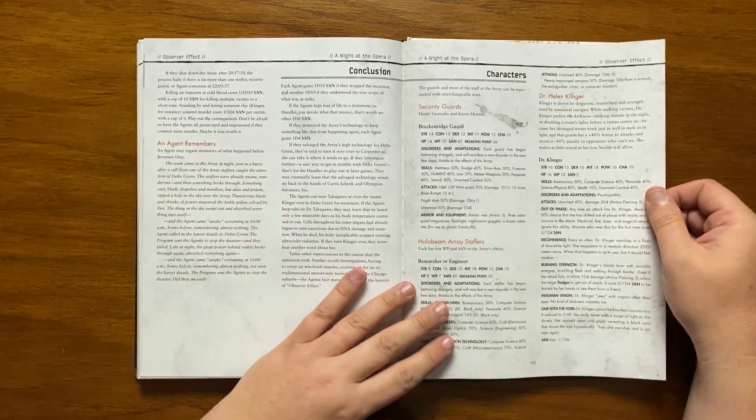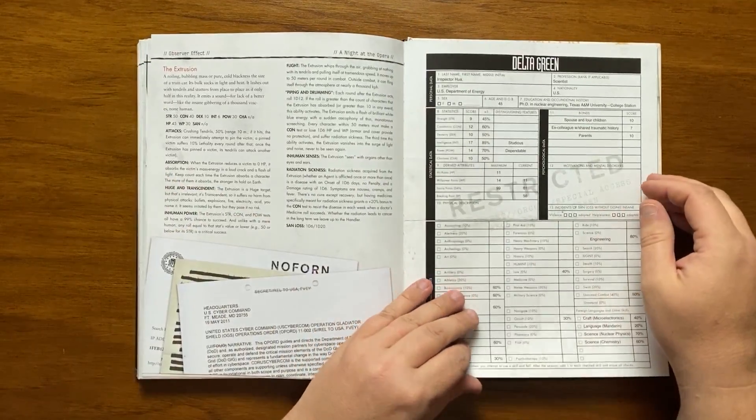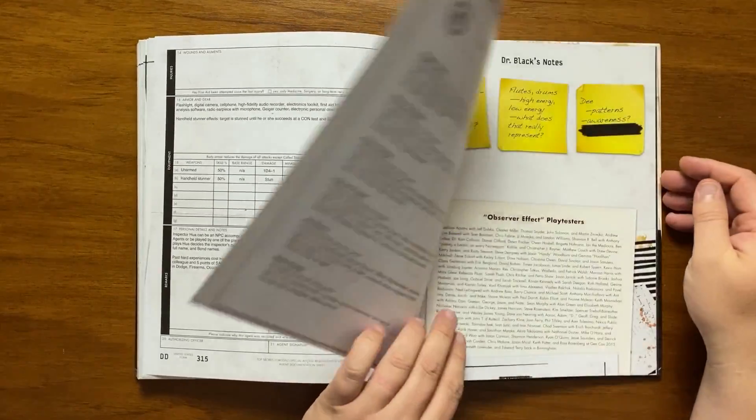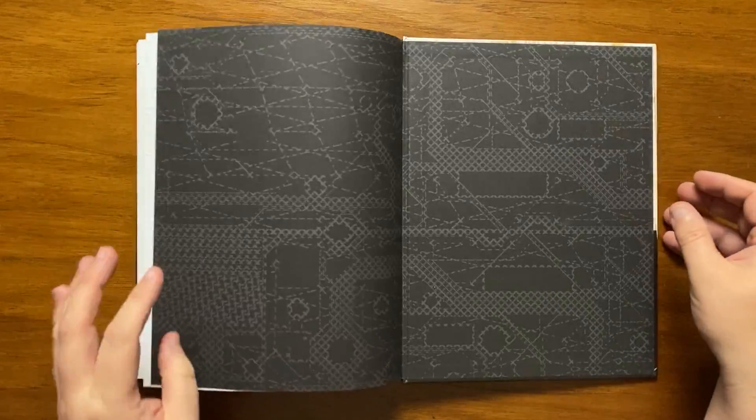After this we have the characters from the scenario, a few handouts and a list of playtesters. With Observer Effect,